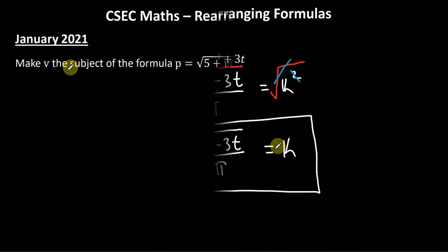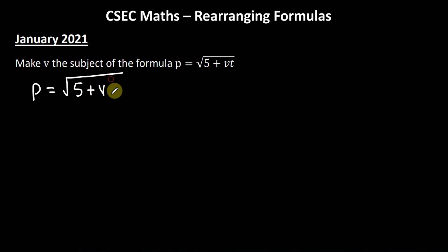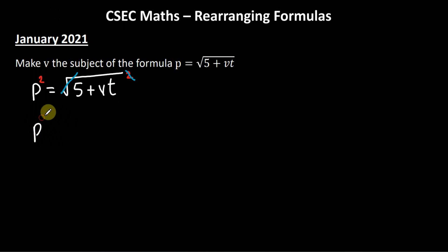Now looking at the question given on the January 2021 paper. Make v the subject of the formula p = √(5 + vt). Because everything on the right is enclosed by the square root symbol, I'll get rid of the square root first by squaring both sides. The square cancels the square root, and we're left with p² = 5 + vt.